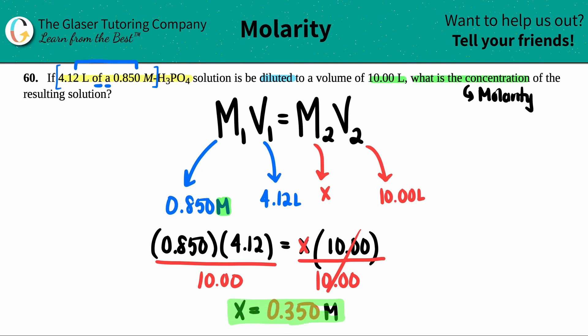Guys, what'd you think? This one was pretty quick. Dilution formulas are pretty easy. M1V1 equals M2V2. Plug in your molarities, plug in your volumes, make sure that they're the same units for your molarity and volume. And that's it.